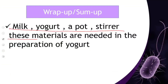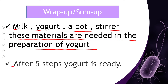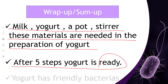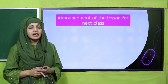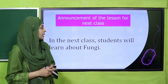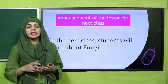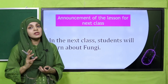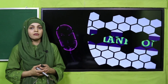What have we learned today? Milk, yogurt, a pot, and a stirrer are the materials needed for yogurt preparation. After five steps, yogurt is ready, and yogurt has friendly bacteria. My dear students, this is the practical for today — I hope you have enjoyed it. In the next lecture, we will learn about fungi, the next group of microorganisms. Keep everybody around you safe, have a good day, thank you so much, and Allah Hafiz.